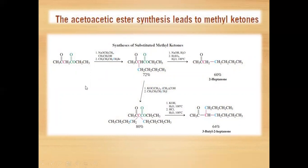For example, ethyl acetoacetate in the presence of sodium ethoxide reacts with any alkyl halide. It can give a monosubstituted or a disubstituted product. Both are further hydrolyzed to form a carboxylic acid, and then decarboxylation gives 2-heptanone or 3-butyl-2-heptanone respectively.